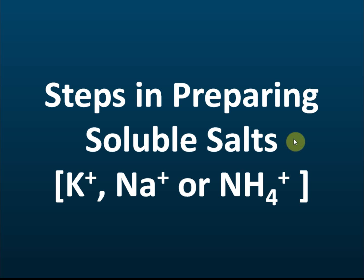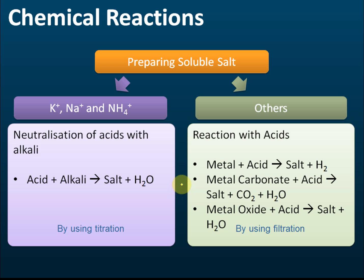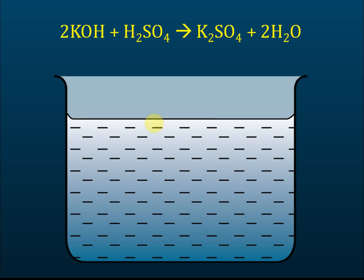In preparing soluble salts of potassium, sodium, and ammonium, the only reaction we can use is neutralization between acid and alkali, and the technique we use is called titration. The question is: why can't we use the other three reactions of acid to prepare the salts of sodium, potassium, and ammonium?